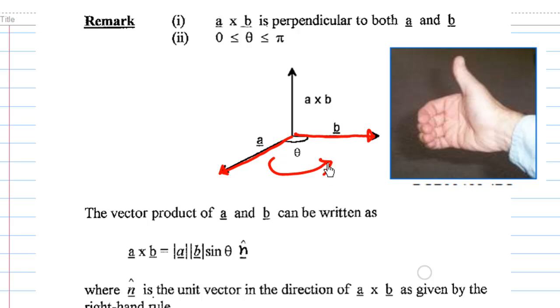And use your right thumb. You find that the thumb is pointing upwards, and that direction is the direction of a cross b.